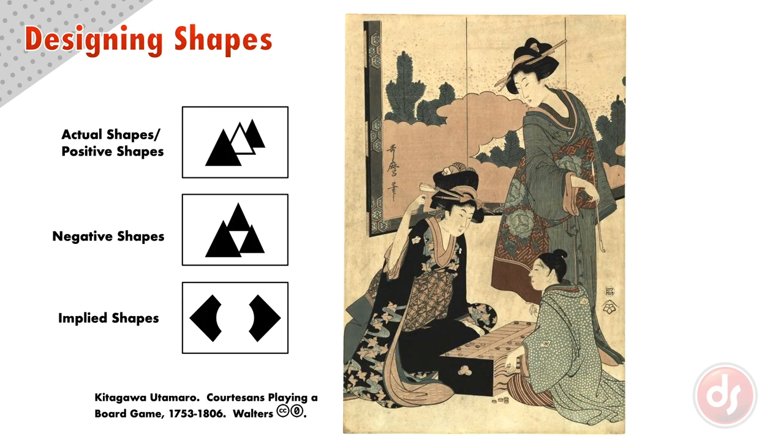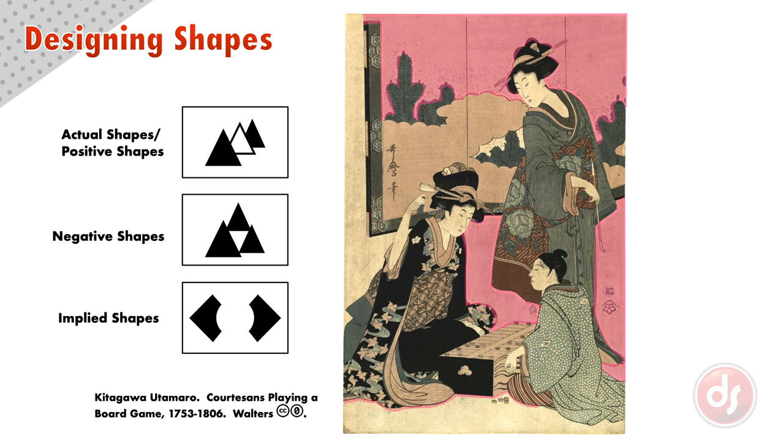It doesn't matter if it's a positive shape, negative shape, or implied shape. They are all equally important to our design. Think of them all like a series of puzzle pieces, and we must be conscious of their specific shape and how they relate to each other. If you ignore this, you are missing out on a key part of your design.